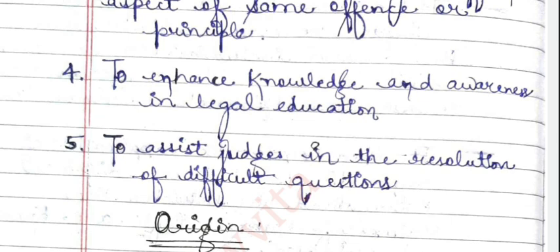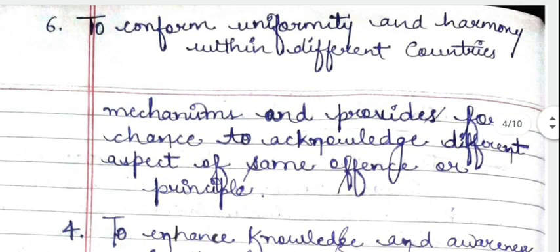Fifth objective: to assist judges in the resolution of difficult questions, especially in international cases where confusion arises involving two or more countries. The research and general principles derived from comparative law assist judges in resolving such difficult questions. The last objective is to confirm the uniformity and harmony within different countries — to attain harmony among different countries.